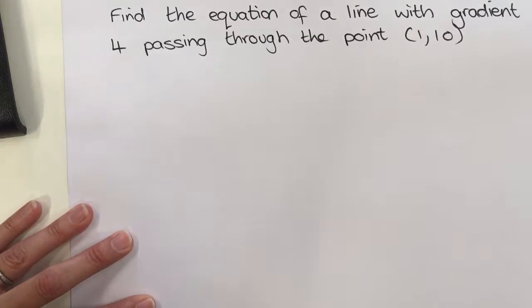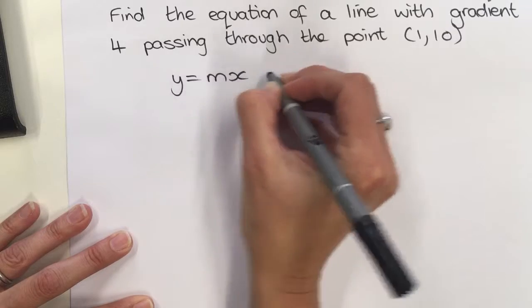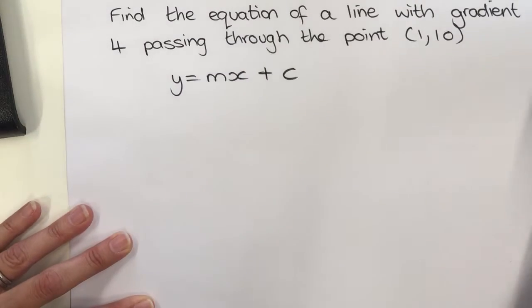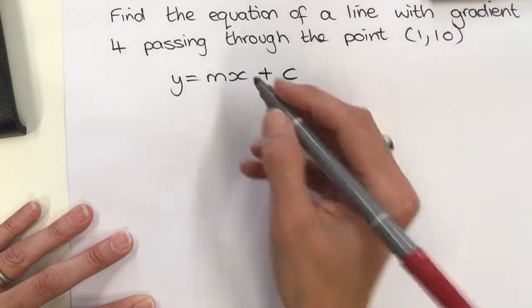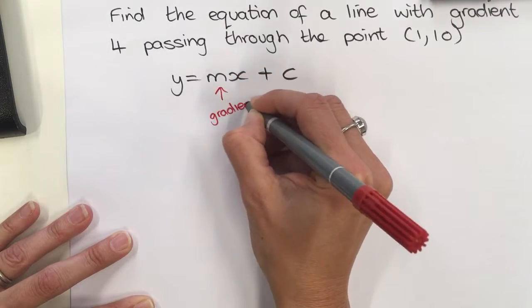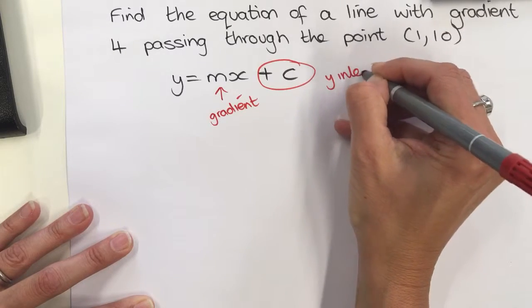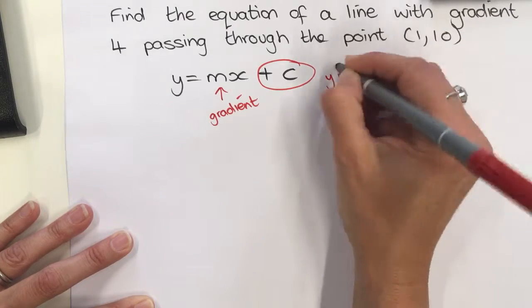Remember, the equation of a straight line is y = mx + c. The m is the gradient and the c value is the y-intercept, where the graph crosses the y-axis.